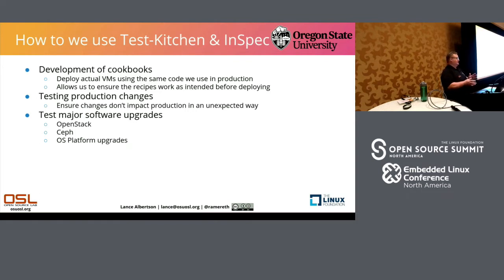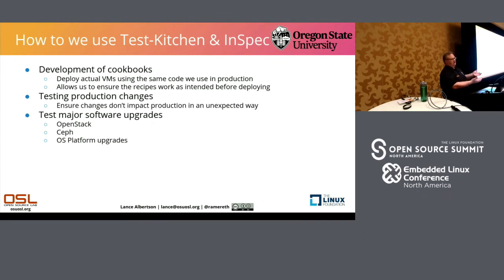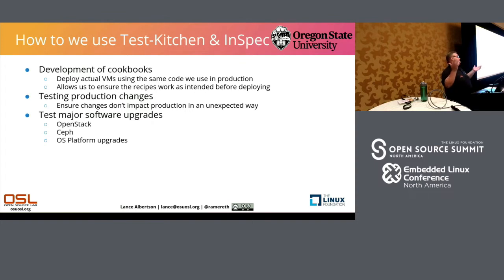We've actually gotten to the point where we use Test Kitchen in a multi-node environment. I can have a controller node and a compute node acting as part of a cluster, making sure they can talk to each other, firewalls are set up properly, and we can run commands between them. The same thing with Ceph — we can have a node that spins up and tests that it can mount the CephFS file system. Another major use is operating system platform version upgrades. For example, CentOS 8 is coming out soon and we're currently on 7. Once 8 comes out, we can use Test Kitchen and InSpec to ensure that all the changes between 7 and 8 are handled and we know ahead of time that everything is sane.